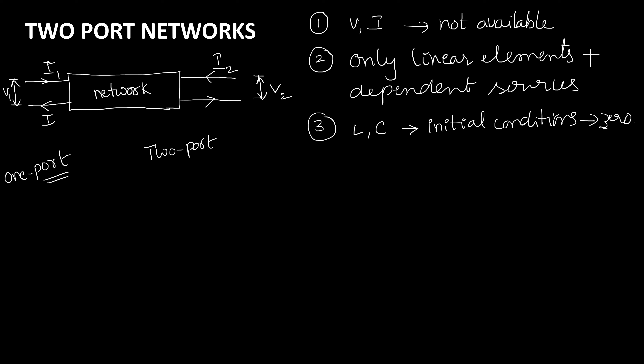One more important point: we have I1 and I2. The directions of both currents I1 and I2 are assumed to be flowing into the network.